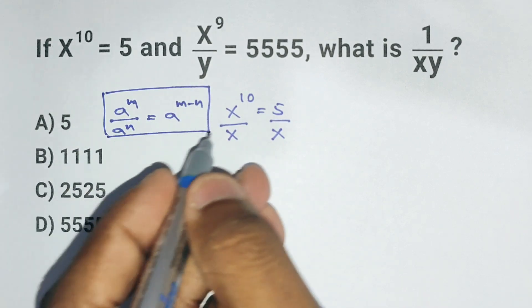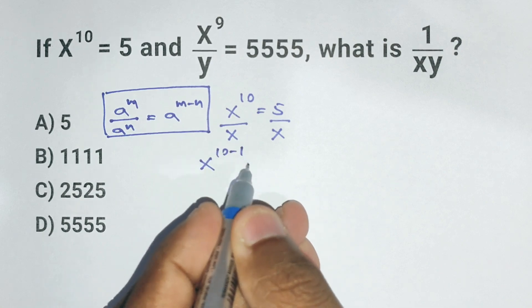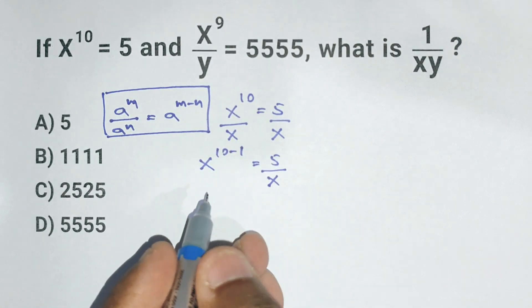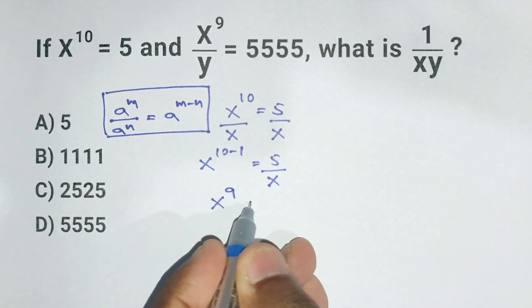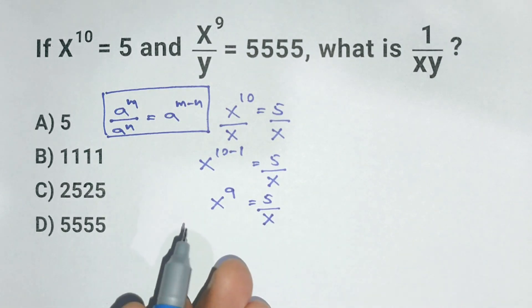So x to the 10 divided by x becomes x to the 10 minus 1. So now we have x to the 9 equals 5 divided by x. Got that? Let's use this in the next part.